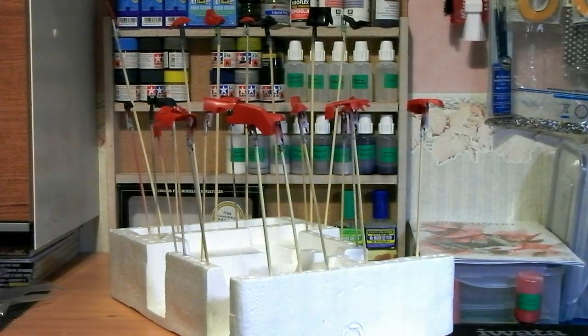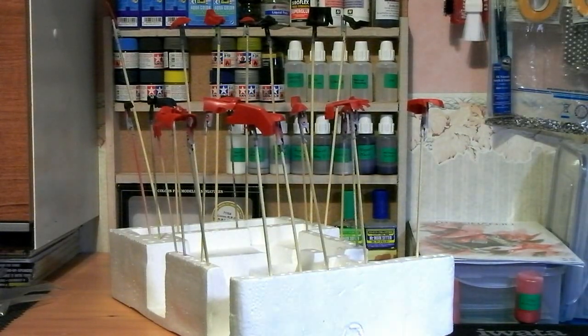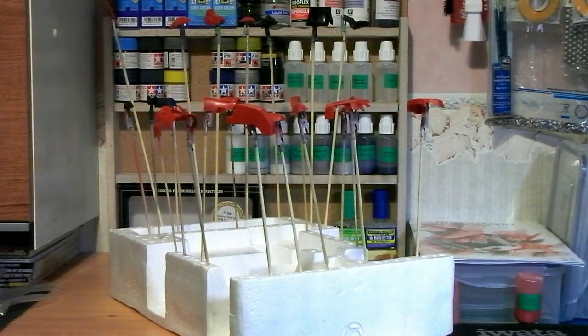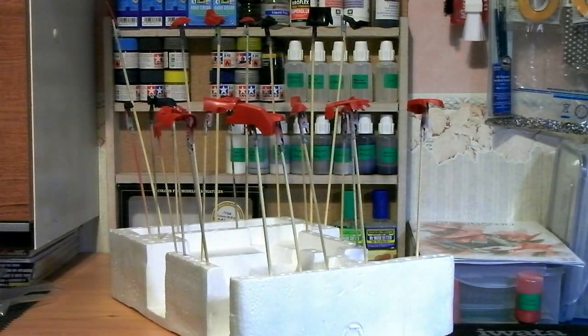Okay, so welcome back to the next part of my Master Grade Sinanju airbrush tutorial. I've done both arms and I'm working on one of the legs now—sorry, not one of the legs, this is actually part of the main body. I've got them all up on their skewers and ready for priming.